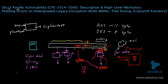SSL version 3 is quite old — it was developed 18 years ago in 1996. It's been long superseded by improved protocols, for example the TLS protocol, which itself has had multiple versions. TLS was introduced 15 years ago in 1999. For the most part, people have abandoned SSL v3 in favor of TLS.